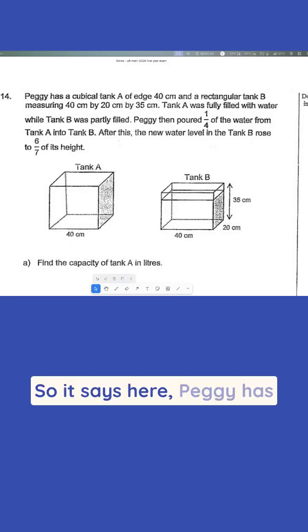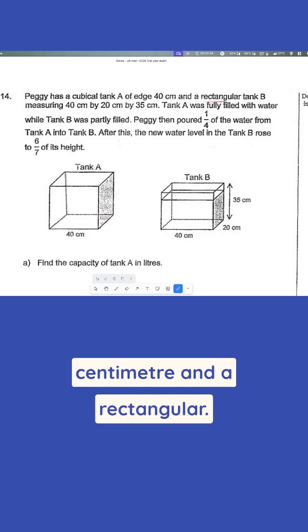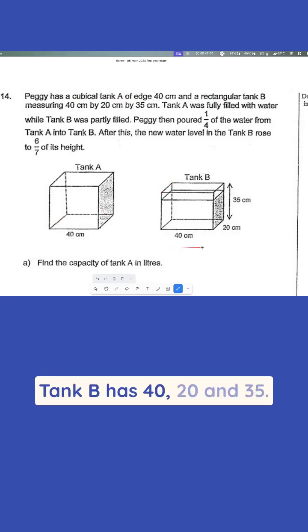So it says here, Peggy has a cubical tank A of edge 40 cm and a rectangular tank B measuring 40, 20, and 35. Tank A was fully filled with water while tank B was partly filled.